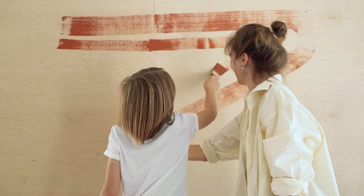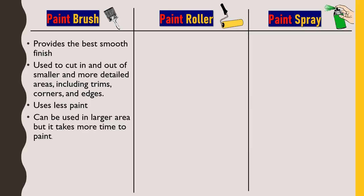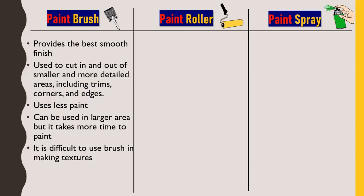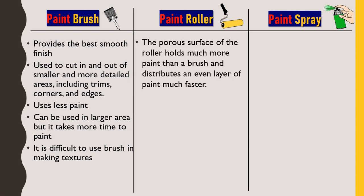We can use a brush to paint larger areas in our home like walls and ceilings, but it consumes comparatively more time. This is the only limitation of using a brush — when you paint any surface using a brush, you have to keep dipping it in the paint bucket again and again because it covers very little area per dip. Also, it is difficult to use a brush for making textures; it's not impossible, but it needs a highly skilled and experienced person.